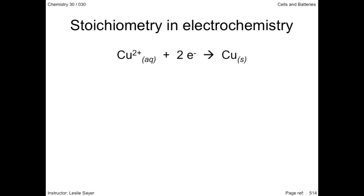For the half reaction showing the reduction of copper ions, we can read this as one mole of copper ions and two moles of electrons produce one mole of copper metal.